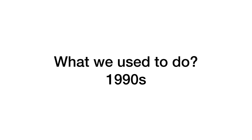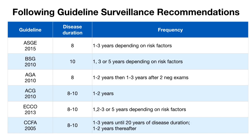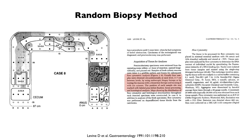Let me take you back to what we used to do when I was a fellow in training in the early 1990s. At that time, we realized it is important to do surveillance examination for patients with long-standing disease, especially those with pancolitis from ulcerative colitis or Crohn's, with a duration of 8 to 10 years. We used to take random biopsies — four quadrants, every three to seven centimeters, starting from the cecum all the way to the distal rectum.